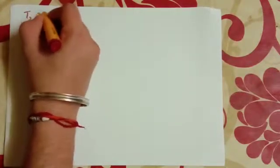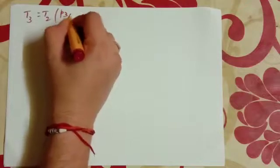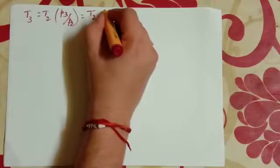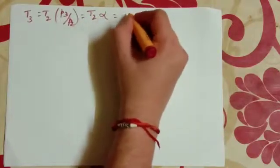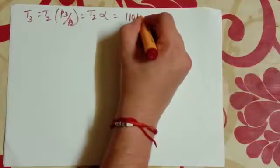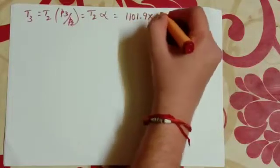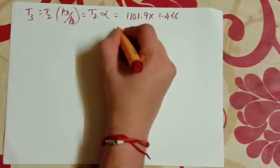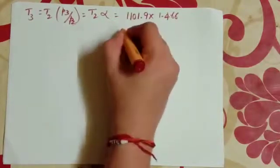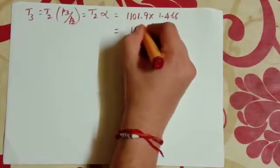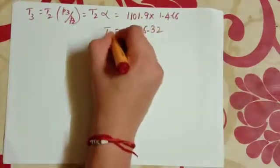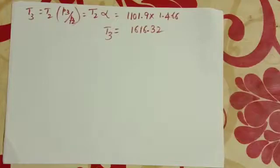P3 is equal to T2 into P3 by P2. That is equal to T2 times alpha, which is 1101.9 into 1.466, which we have just calculated. That will be equal to 1616.32. This is T3.